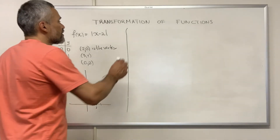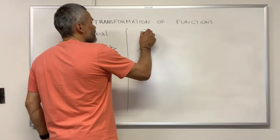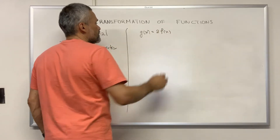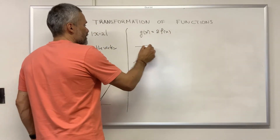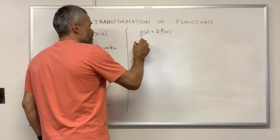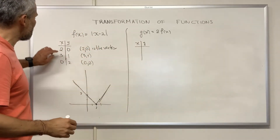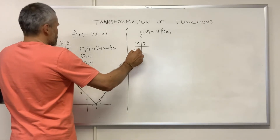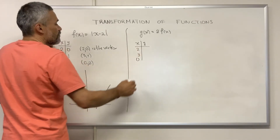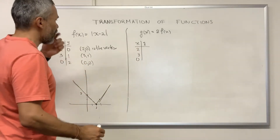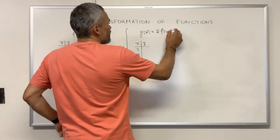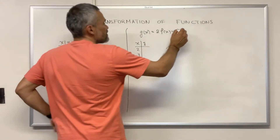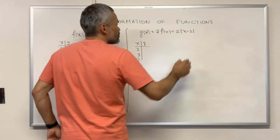Now let's consider this new function g of x equal to 2 times f of x. In this case, we can get a table of points for g. We notice that if we select the same points for x — 2, 3, and 0 — then we are going to get almost the same points for y. This is equal to 2 times f of x, which is |x minus 2|.